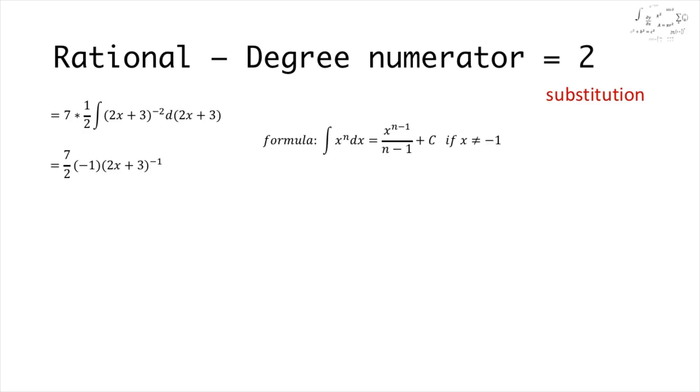The last step is the easiest one and it's just to fill in the formula. So our exercise is solved and is equal to 7 over 2 times minus 1 times (2x plus 3) to the power of minus 1.